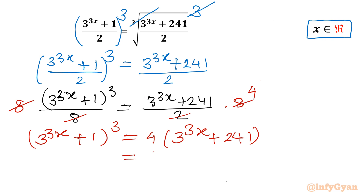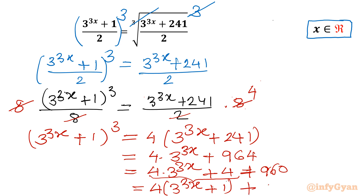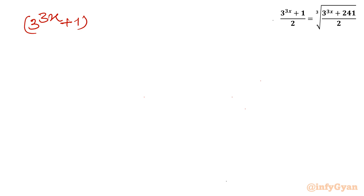Multiplying out the right-hand side: 4·(3^(3x)) + 4·241 = 4·(3^(3x)) + 964. Now I can split 964 as 4 + 960, then factor out 4 to get 4·(3^(3x) + 1) + 960.